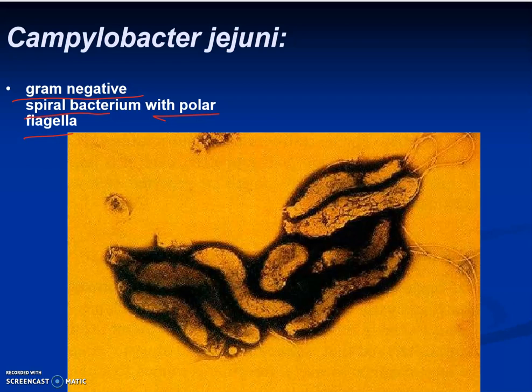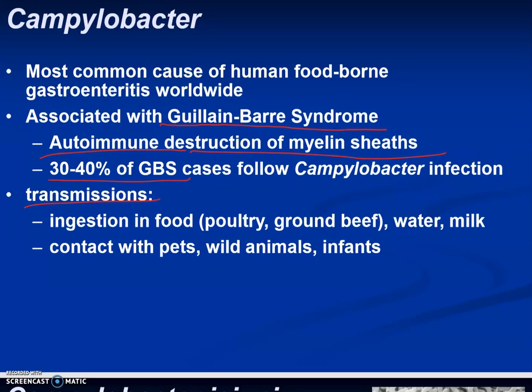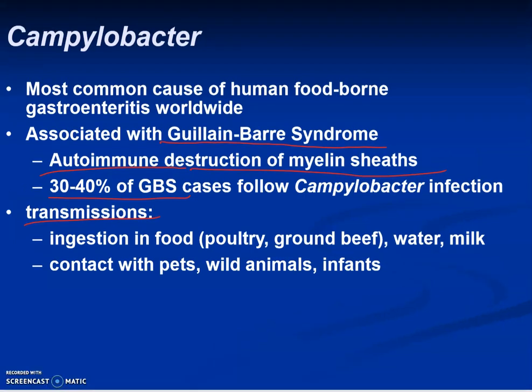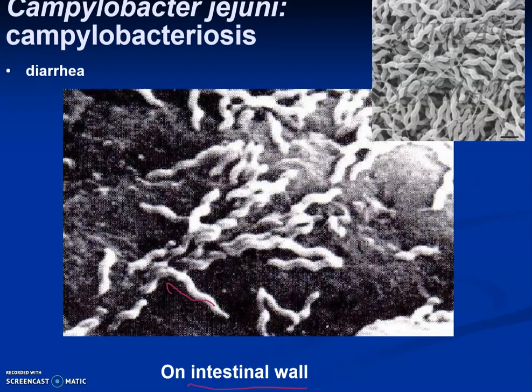Next is Campylobacter jejuni, a gram-negative spiral bacterium with polar flagella. It is the most common cause of human foodborne gastroenteritis in the world, and is associated with Guillain-Barré syndrome, which involves autoimmune destruction of myelin sheaths — 30 to 40% of Guillain-Barré cases are associated with Campylobacter infection. Transmission is through contaminated food, water, milk, or contact with pets and wild animals.